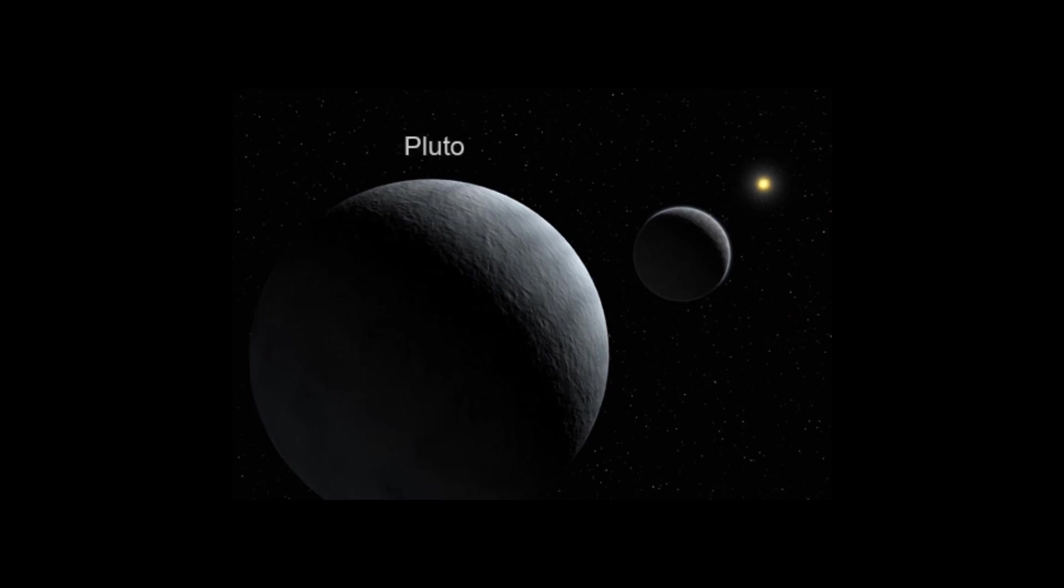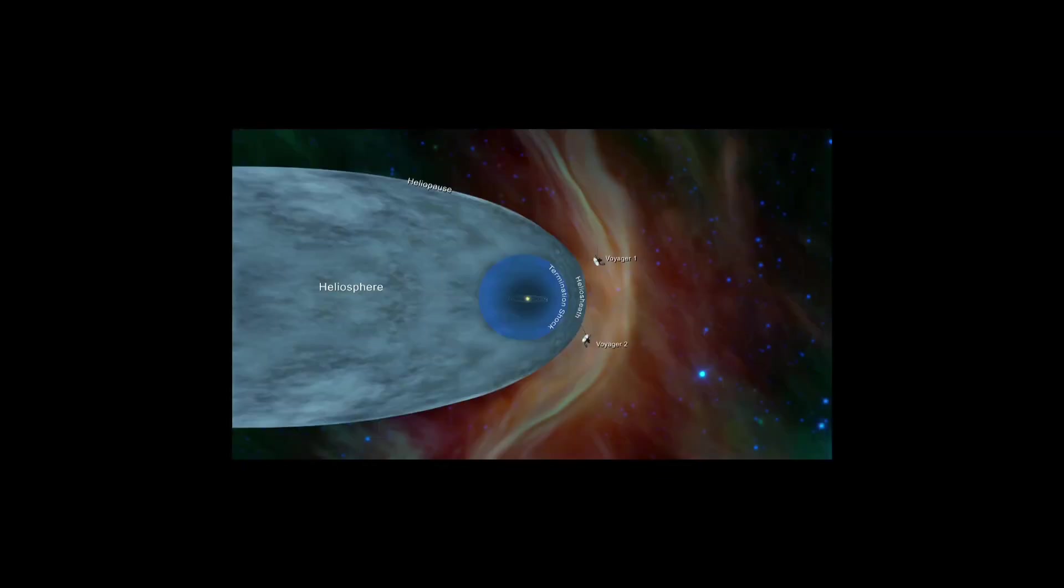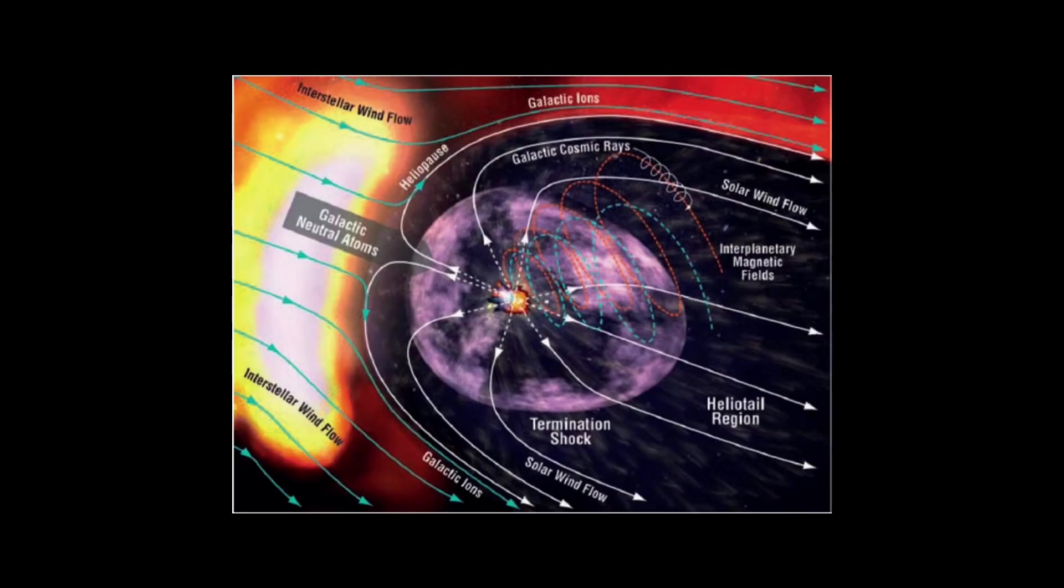Our star releases charged particles called solar winds, which travel far past Pluto before being impeded by the interstellar medium. This forms a massive bubble around the solar system known as the heliosphere. One of its qualities is that it serves as a giant shield, protecting the planets from galactic cosmic radiation.